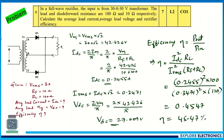The next problem is on a full wave rectifier. The input is from a 30-0-30 transformer. The load resistance and diode forward resistance are 100 ohm and 10 ohm respectively. We need to calculate the average load current, average load voltage, and rectifier efficiency.